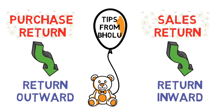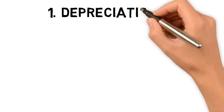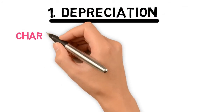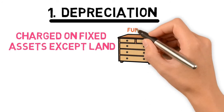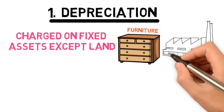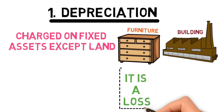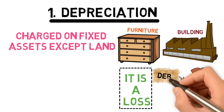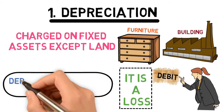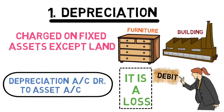Now let's move forward towards the common mistake related to depreciation. Depreciation is basically charged on fixed assets like furniture, plant and machinery, building, etc. It is not charged on land. Depreciation is a kind of loss, so it is always written on the debit side. The journal entry will be: Depreciation Account debit, to the Asset Account.